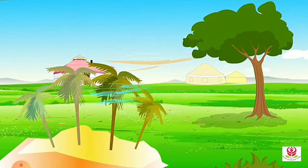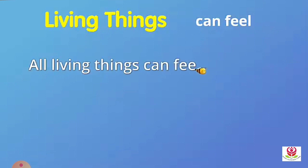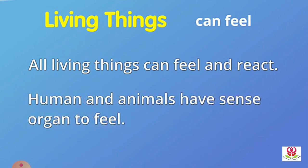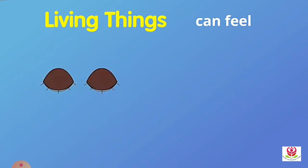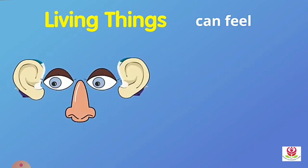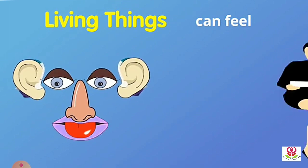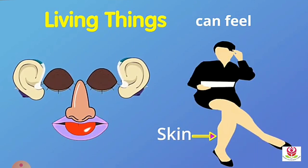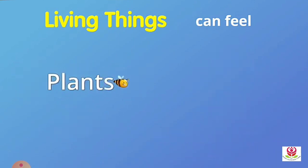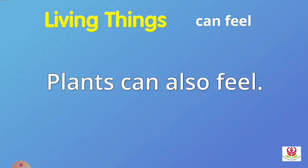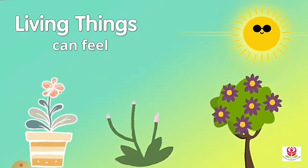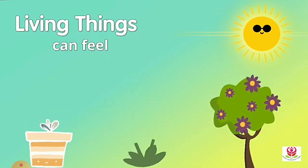Living things can feel. We can feel the air that moves around us. Humans and animals have sense organs to feel — the five sense organs are eyes, ears, nose, tongue, and skin. Plants can also feel — they feel the sunlight, which helps them to grow.